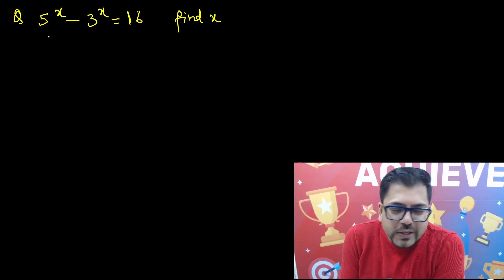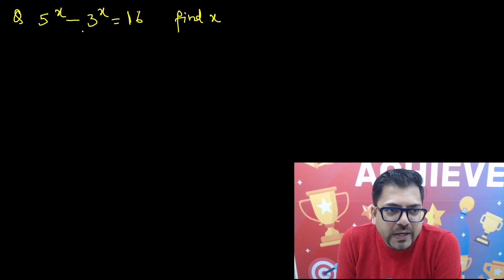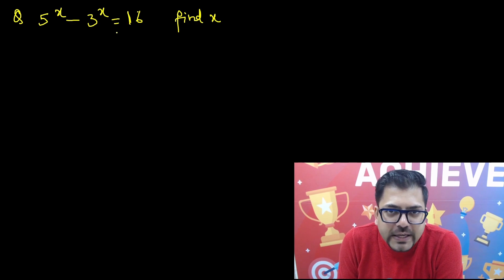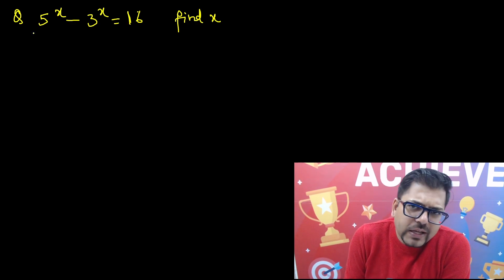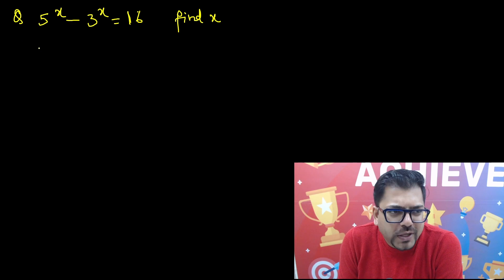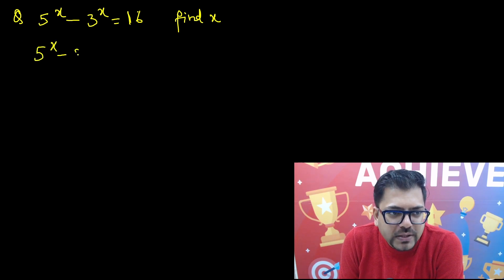Let's talk about this question. 5 raised to power x minus 3 raised to power x equals 16. If you can see, this is a very easy question. 5 raised to power x minus 3 raised to power x equals 4 squared.